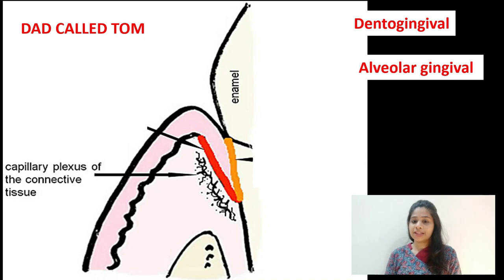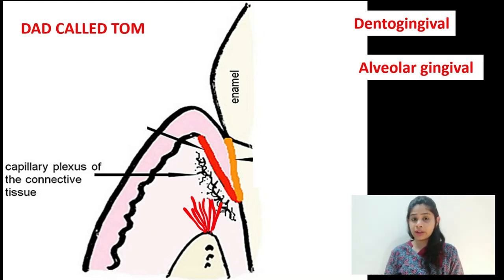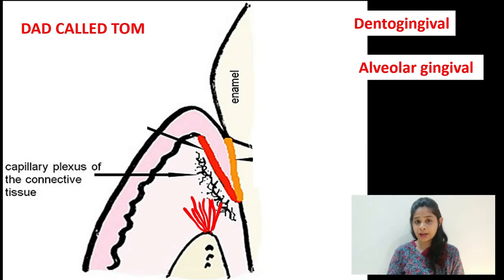Next are the alveologingival fibers — alveolar meaning alveolar bone and gingival. These arise from the alveolar crest and extend coronally, getting attached to the marginal gingiva. They help in the attachment of the gingiva to the alveolar bone.